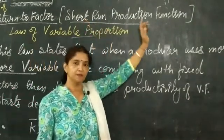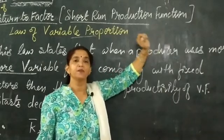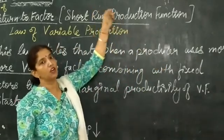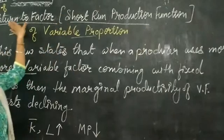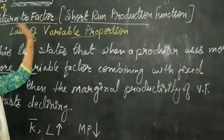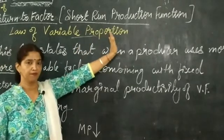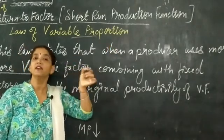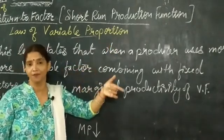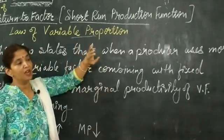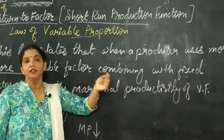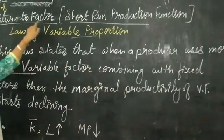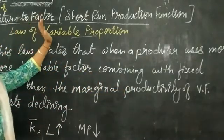The short run production function is the relationship between factors of production and output in the short run. It is also known as the law of return to factor or law of variable proportion, because the proportion of fixed factor and variable factor can be varied, and the return to the variable factor is studied here.